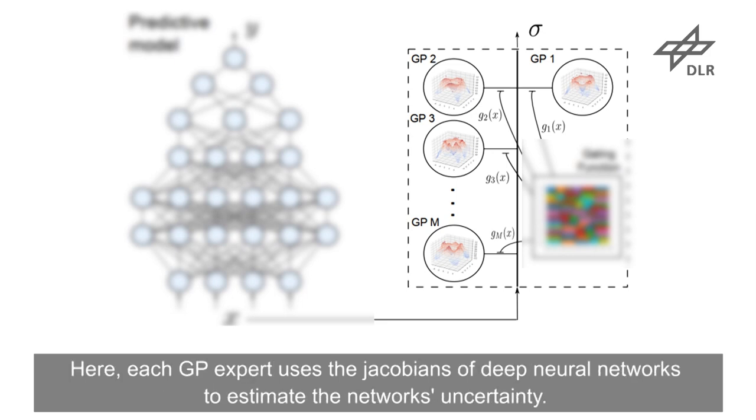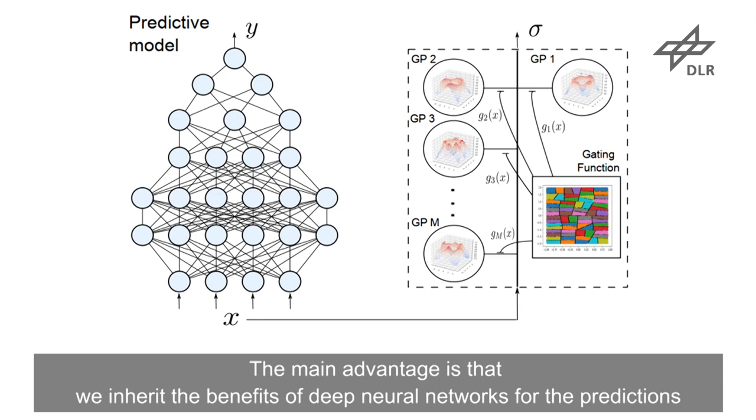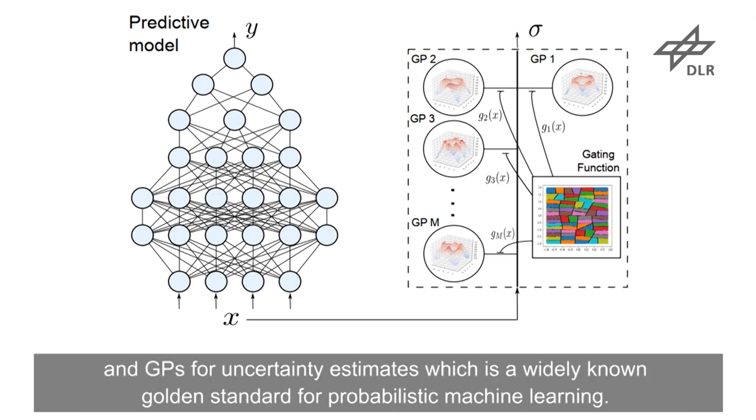Here, each GP expert uses the Jacobian of deep neural networks to estimate the network's uncertainty. The main advantage is that we inherit the benefits of deep neural networks for the predictions and Gaussian processes for uncertainty estimates, which is a widely known golden standard for probabilistic machine learning.